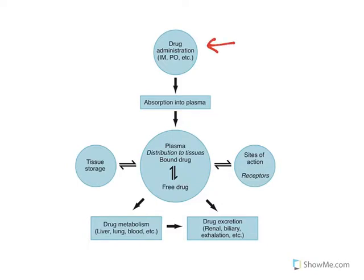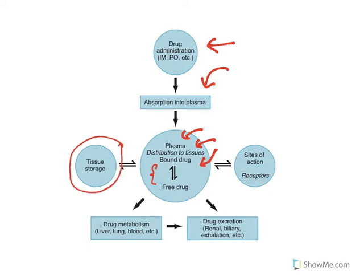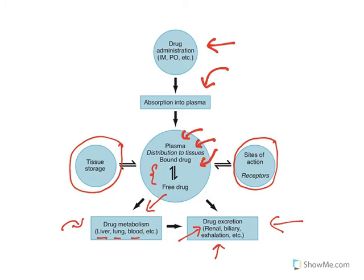Getting into the details: when a drug is administered — whether by peroral or parenteral route — it gets absorbed into the plasma. This is the key aspect of absorption. From the plasma, it can remain in plasma, be distributed to tissues, or bind to plasma proteins. There is an equilibrium between bound and free drug. Some drug goes into tissues and is stored there; some binds with receptors and shows its action. The drug then goes to the liver for major metabolism, and is finally excreted through the major renal pathway and minor pathways such as biliary and exhalation — for example, alcohol is excreted through exhaled air.